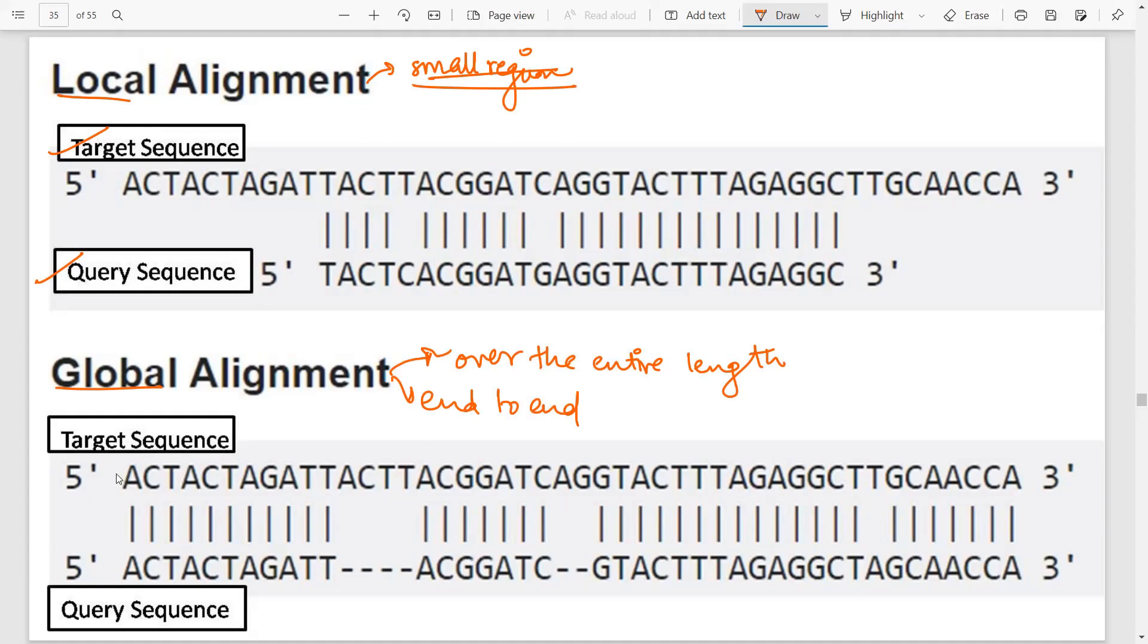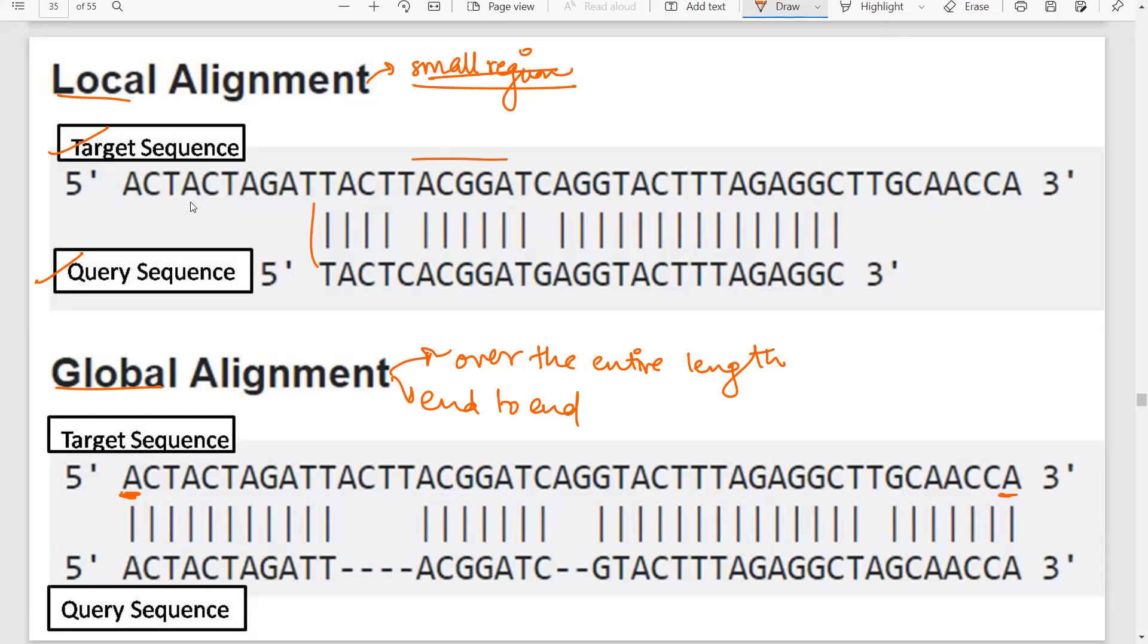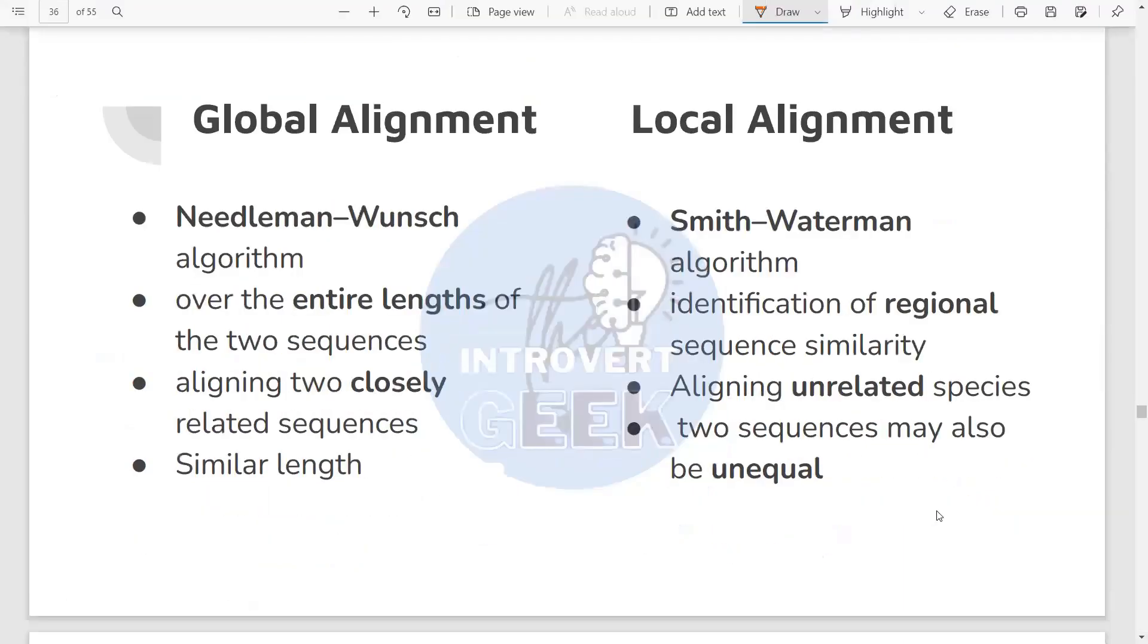So dynamic methods alignment is done quantitatively and this is possible by calculating the number of matches and mismatches between the sequence and also by addition or subtraction of the gaps. Now to understand which algorithm to use, you first have to understand the difference between a local alignment and a global alignment. So consider these two sequences. This is the target sequence and this is the query sequence. So if you want to check for a small region, you go for local alignment. Global alignment: entire length.